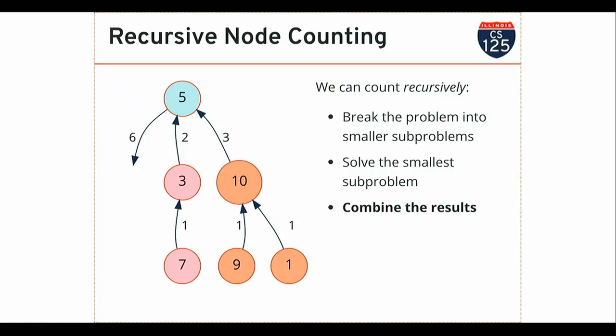Good question: how do I know which subtree to count first? It doesn't matter. The count of the number of nodes in a tree rooted at a particular node is left plus right plus one, or right plus left plus one. Addition is associative, so we're fine.